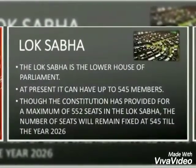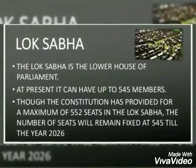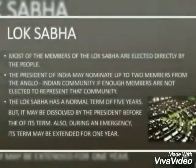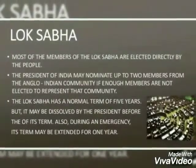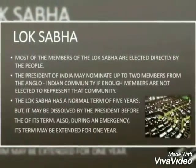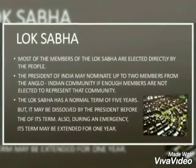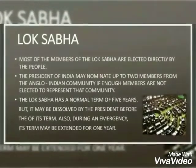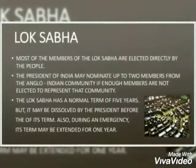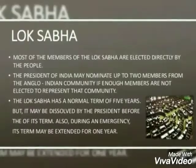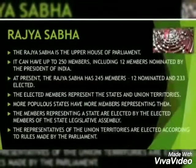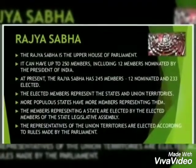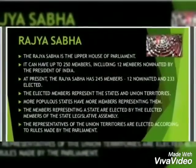Next is the Rajya Sabha. The Council of States, or the Rajya Sabha, is the upper house of the parliament. There can be a maximum of 250 members in the Rajya Sabha, out of which 238 members represent the states and the Union Territories. Members of the State Legislative Assemblies elect members of the Rajya Sabha. The Vice President is the presiding officer or chairman of the Rajya Sabha.